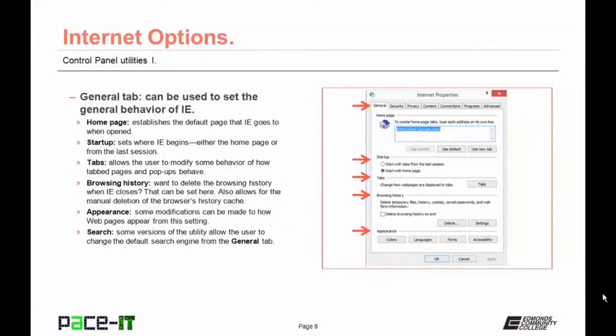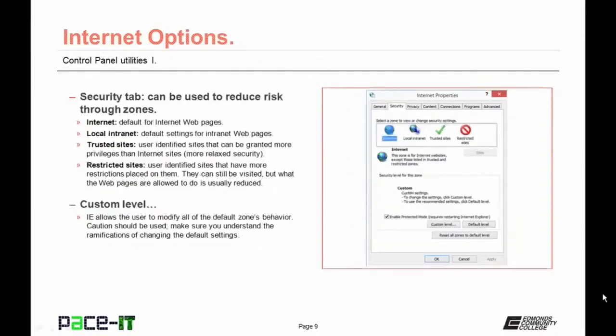Some versions of the Internet Options applet have a section to set the default search engine. Now the Security tab allows you to reduce risk through zones. The Internet zone is the default for web pages. Local Internet is the default for an intranet or local network. Trusted Sites are user-identified sites granted more privileges than Internet sites with more relaxed security. Restricted Sites are user-identified sites with more restrictions — they can still be visited but what web pages are allowed to do is greatly reduced.